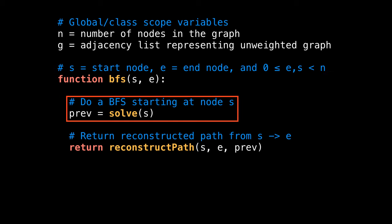I've divided the function into two methods for simplicity. First, we solve the problem by executing the breadth first search. And then we reconstruct the path from s to e. So let's take a look at the solve method.